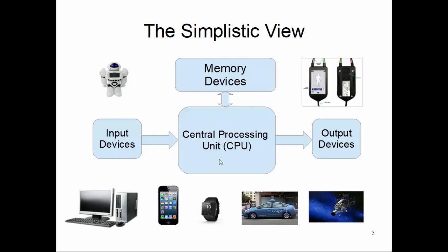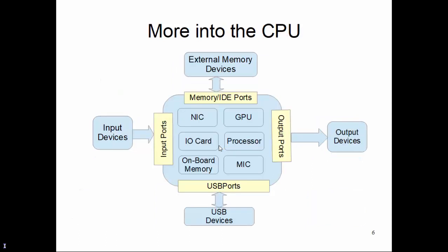Even the CPU, or central processing unit, can be subdivided into different parts. For example, if we open up our computing box like a desktop or laptop, we'll find various components in it, like a network interface card, which is specialized to communicate over our network, and a GPU, or graphics processing unit, which basically processes your graphics data.